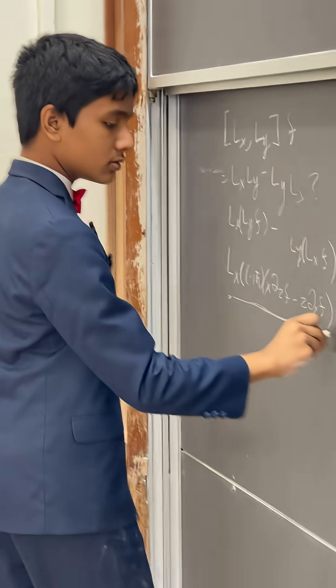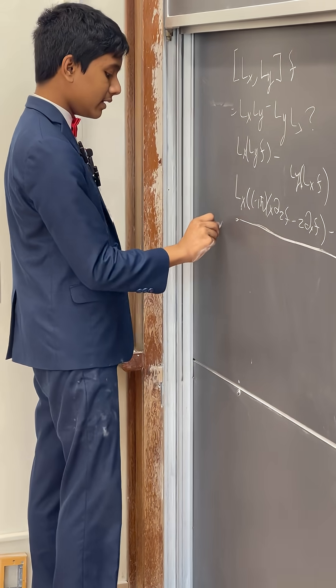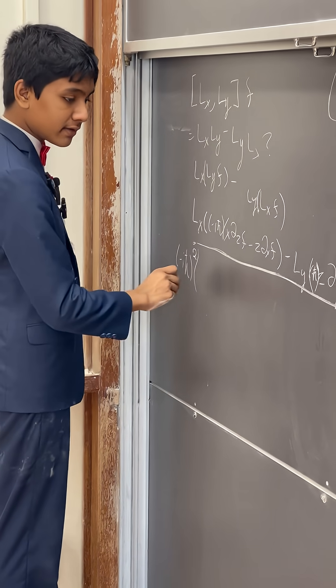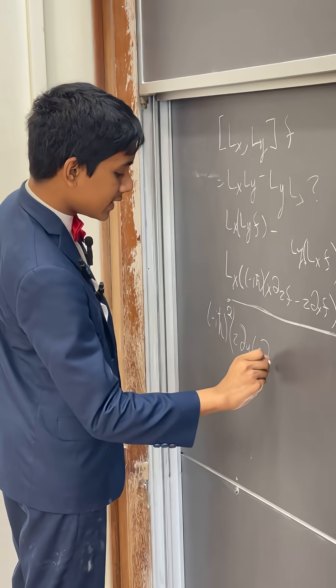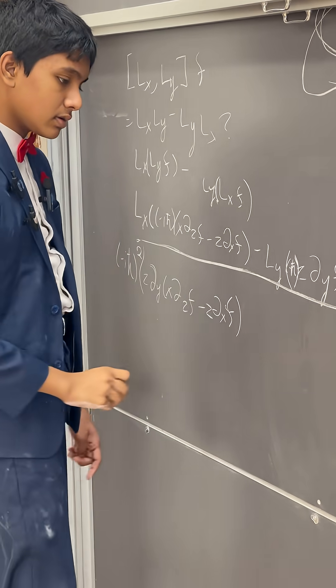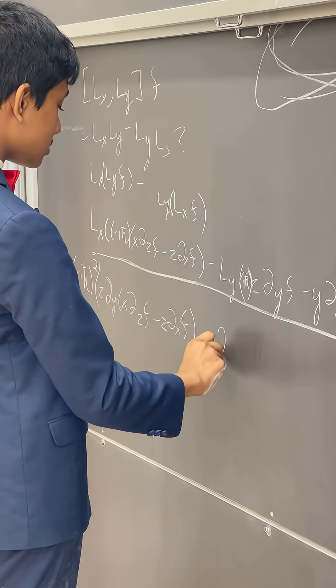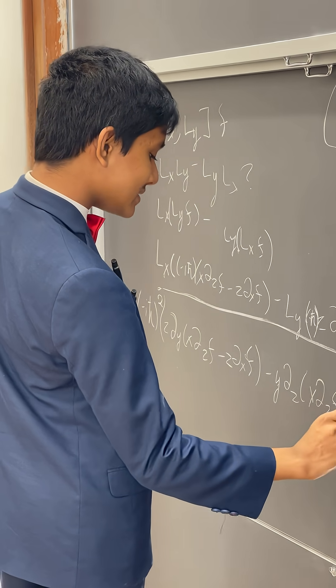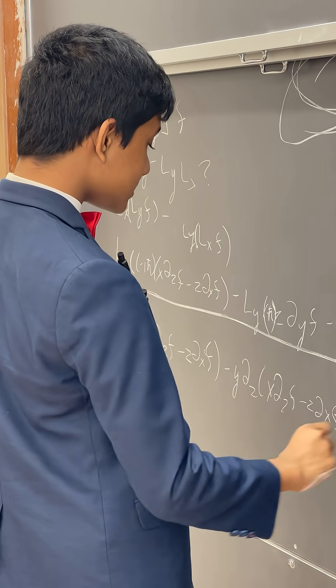And so now you can plug in the definition of Lx. Isolating the minus Ix bar squared out of everything, Lx is going to give us Z partial Y of X partial Zf minus Z partial Xf, Z partial Z partial Y of X partial Z, okay. Minus Y partial Z times X partial ZF minus Z partial Xf minus...